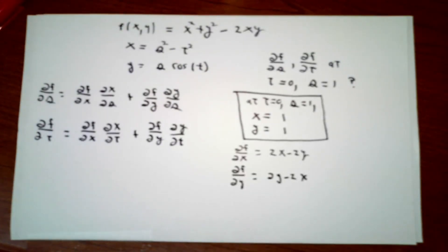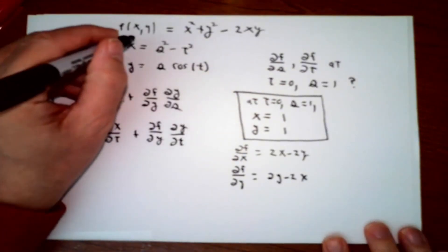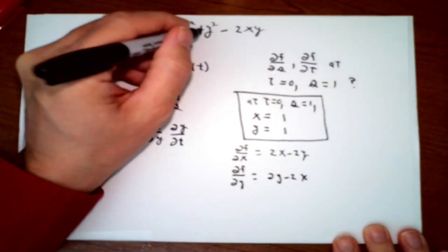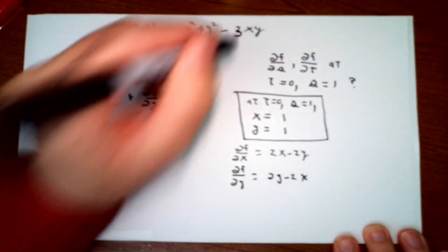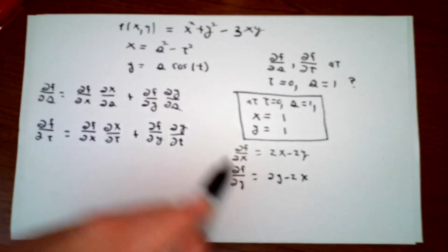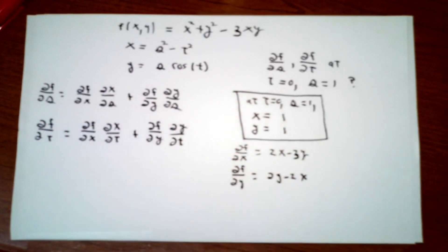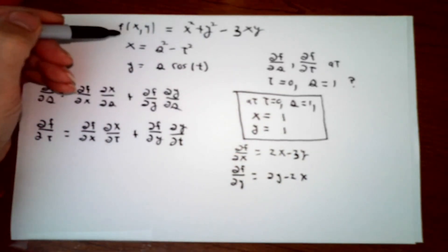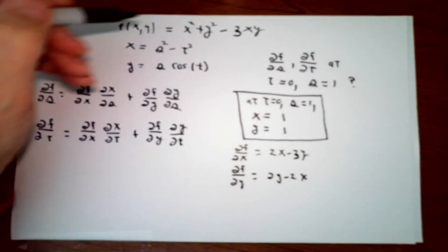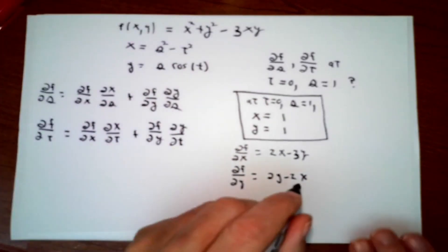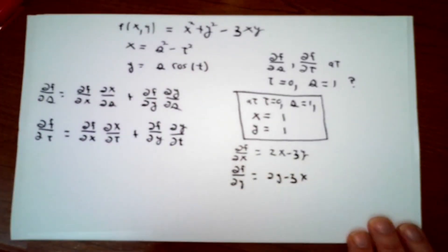Since I belatedly realized that this is going to lead to a boring problem, let me retcon this. f of x and y is x squared plus y squared minus 3 times xy, then partial of f with respect to x is 2x minus 3y, and partial of f with respect to y is 2y minus 3x.